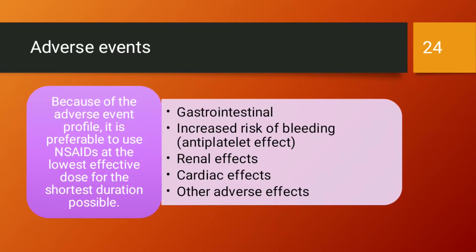Most NSAIDs are well absorbed after oral administration and circulate highly bound to plasma proteins. Most are metabolized by the liver to inactive metabolites, though a few — such as nabumetone and sulindac — have active metabolites. Excretion of active drug and metabolites is primarily via the urine. Due to the adverse event profile, it is preferable to use NSAIDs at the lowest effective dose for the shortest duration possible.